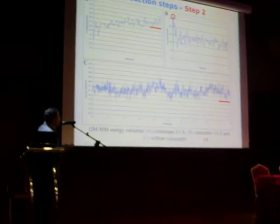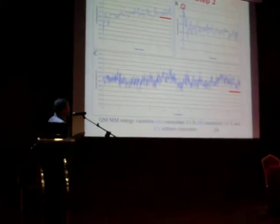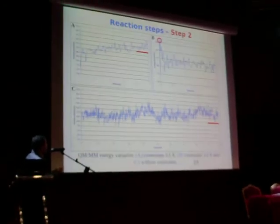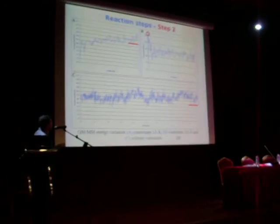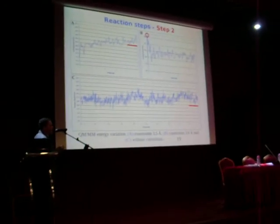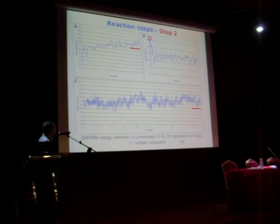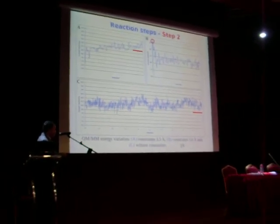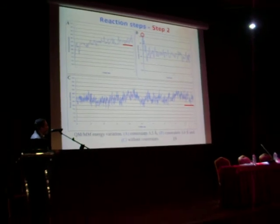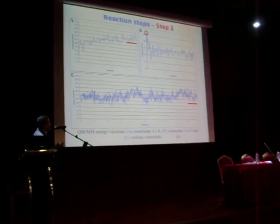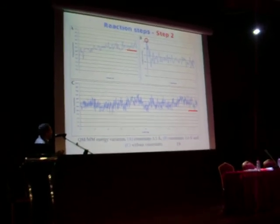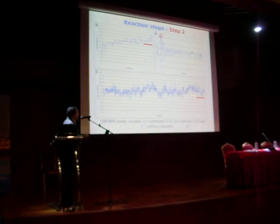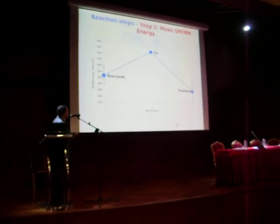We then took the last 5 picoseconds of the reactant and computed the mean value, the last 5 picoseconds of the product and computed the mean values, and identified this point as a possible transition state, and plotted this graph.